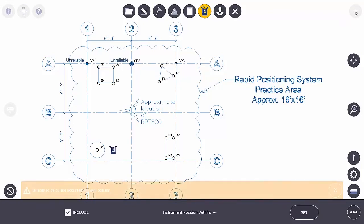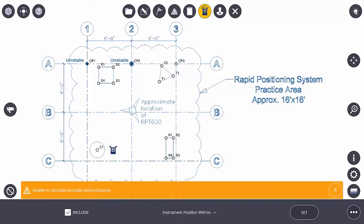It measures with the 360 cat eye target and it gives me a message, unable to calculate accurate station location. Now this is where we need to be a little bit careful.